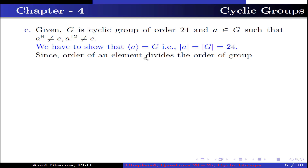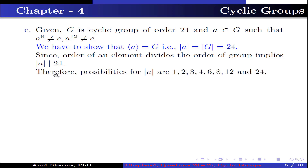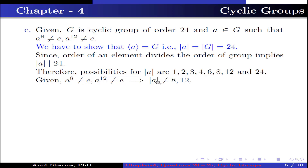Since the order of an element divides the order of a group, this implies order of A divides 24. Therefore the possible orders for A are 1, 2, 3, 4, 6, 8, 12, and 24. Now given A to the power 8 is not equal to identity and A to the power 12 is not equal to identity, this implies order of A cannot be 8 or 12.